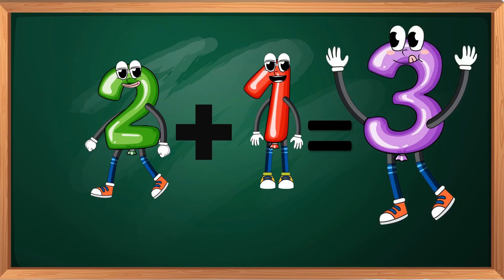And this is the main rule in mathematics. Permuting terms doesn't change the sum. If the sum of one plus two equals three, so two plus one also equals three.